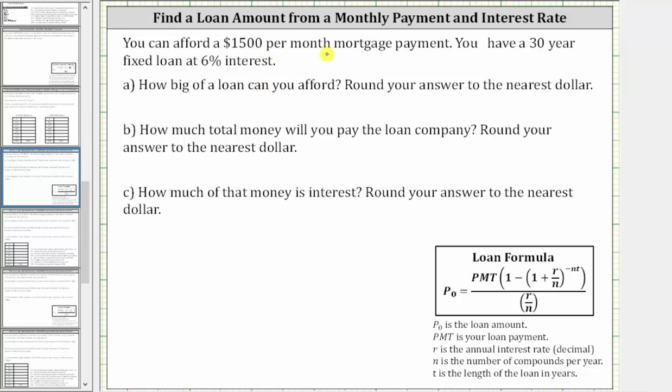You can afford a $1,500 per month mortgage payment. You have a 30-year fixed loan at 6% interest. Part A: How big of a loan can you afford? Part B: How much total money will you pay the loan company? And Part C: How much of that money is interest?